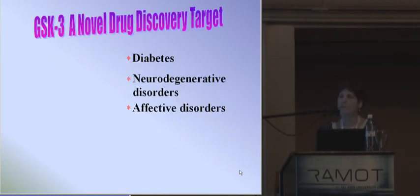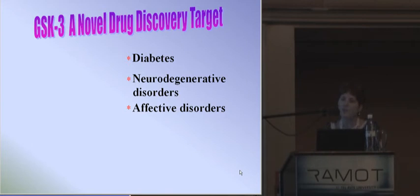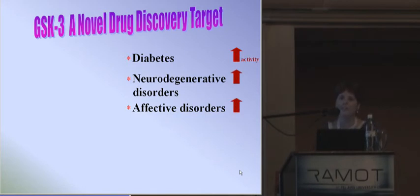GSK3 is a serine/threonine protein kinase, and it is a novel drug discovery target for diabetes, neurodegenerative disorders, and affective disorders. Apparently, the protein kinase activity is elevated in these pathological disorders, so we actually find hyperactivation of this kinase.